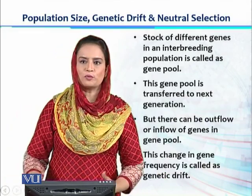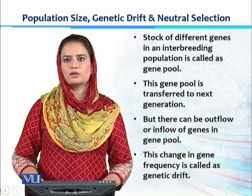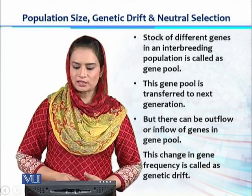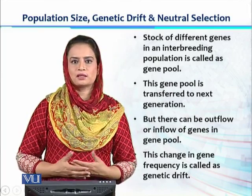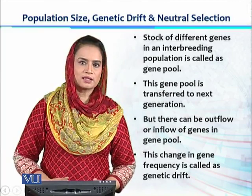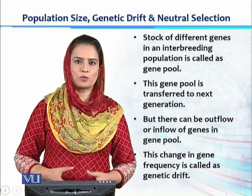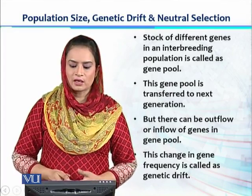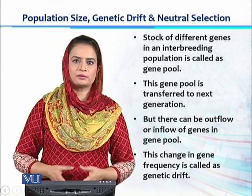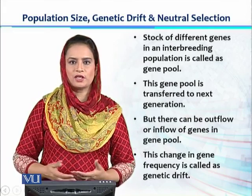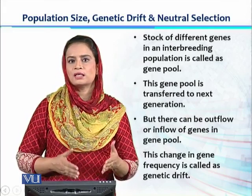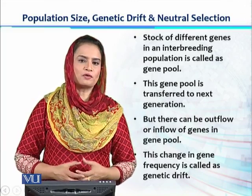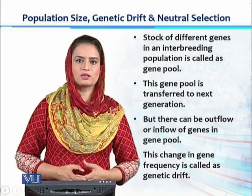A population may have individuals with different traits, and each trait is controlled by a pair of alleles. One individual has so many genes and alleles in its DNA. Similarly, a group or population of interbreeding individuals also carries a stock of different genes and alleles. This stock of genes present in an interbreeding population is called the gene pool.